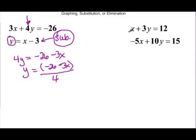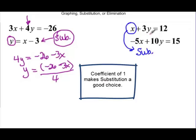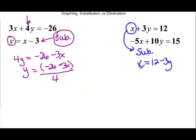In the second system, we can see that we have a coefficient of 1 on this x. So because of that, substitution would be very nice. We could easily say that x is equal to 12 minus 3y. It wouldn't be difficult, though, to also do elimination.